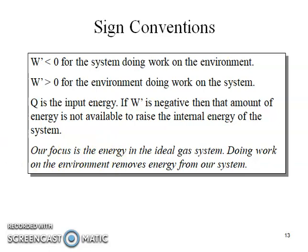We already talked about the sign conventions and how the values of these parameters help us to understand the significance of what these quantities play in our first law equation. For example, work or W, whenever it is less than zero or negative, shows us that the system is performing some work on the surroundings or the environment. And when W is greater than zero, so we find that it's positive, it shows that the surroundings or the environment is doing some work on the system.